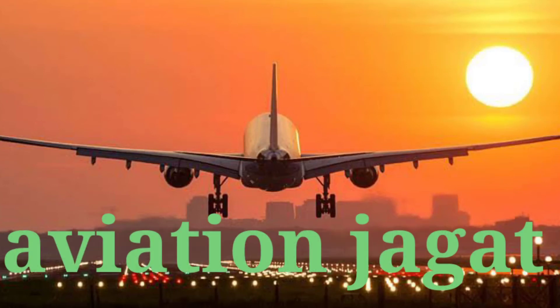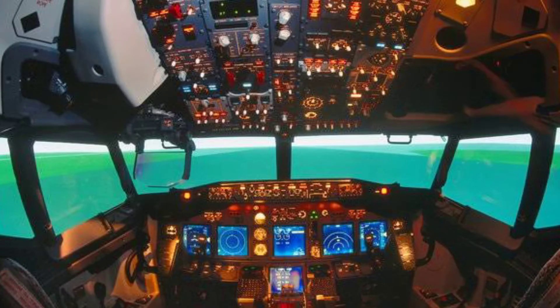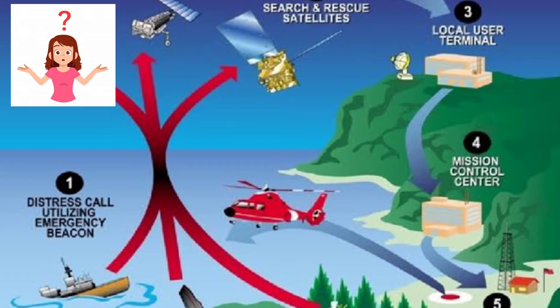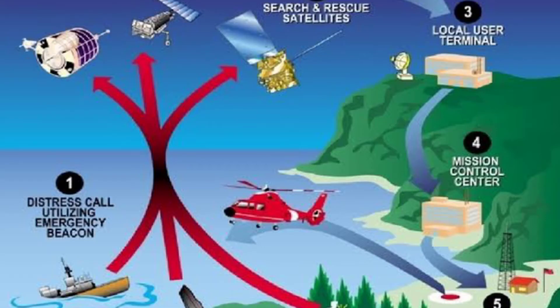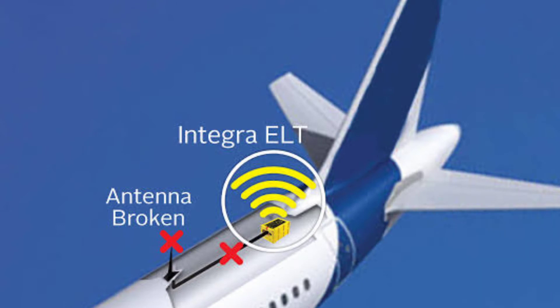Hello friends, you are most welcome in my YouTube channel Aviation Jagat. Today we will talk about ELT, Emergency Locator Transmitter. There are many questions from this topic: what is ELT, where it is placed in aircraft, color of ELT, how it transmits frequency, operation of ELT, how it differs from modern ELT, and the difference between 406 MHz ELT and 121 MHz ELT.